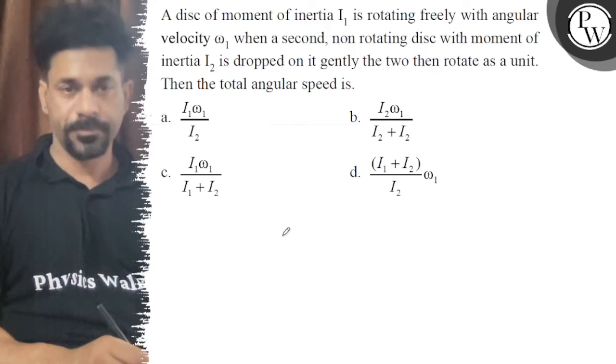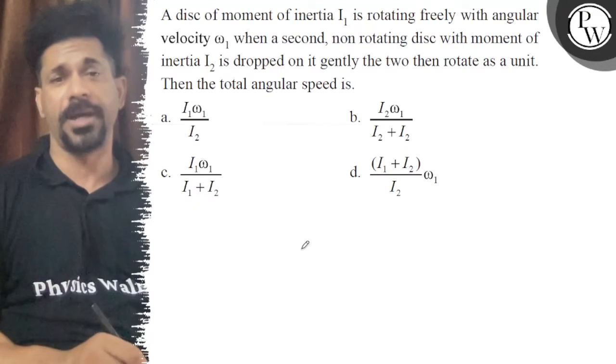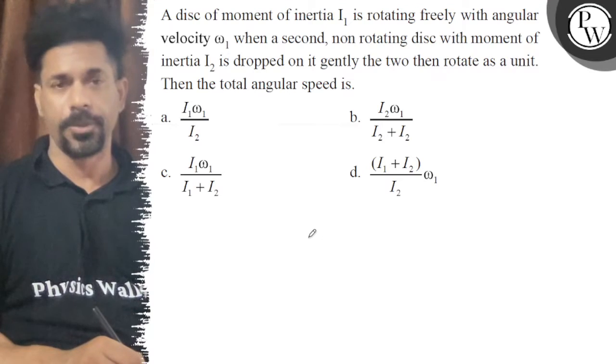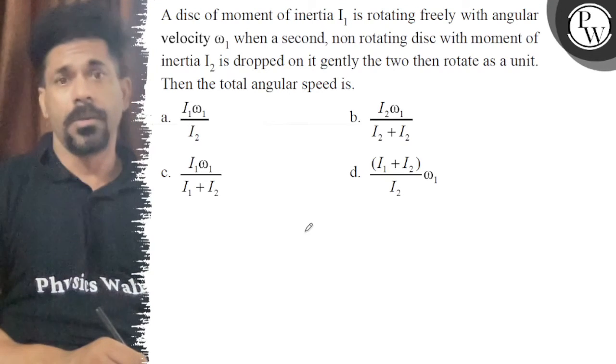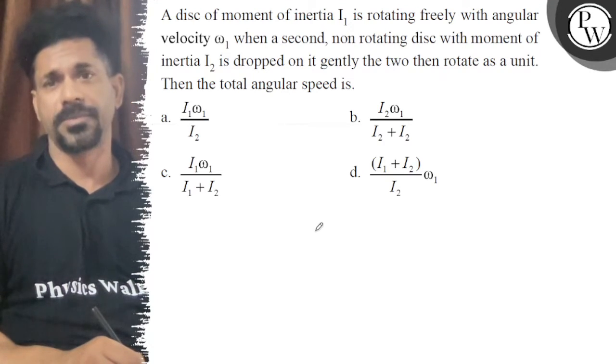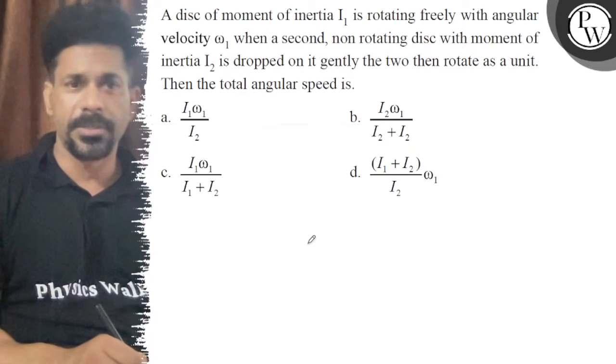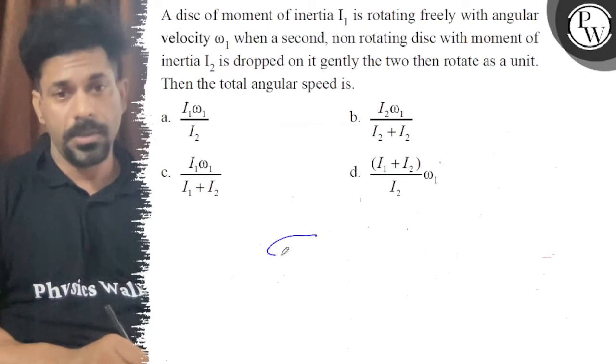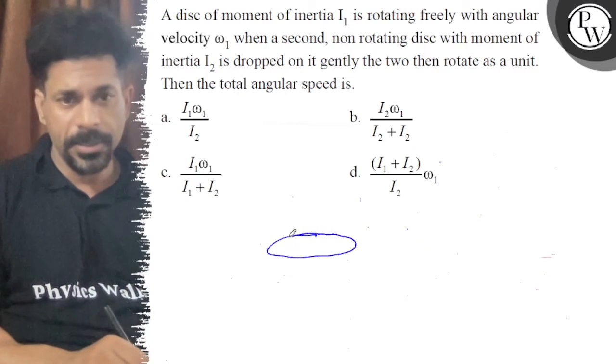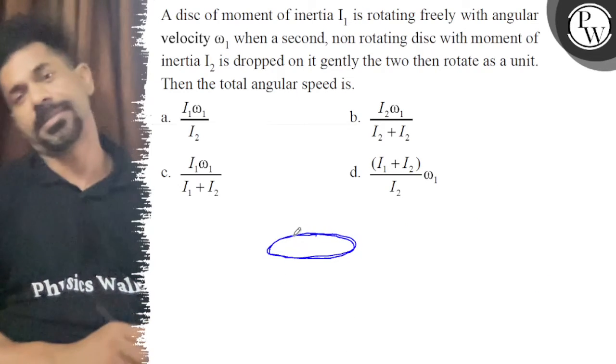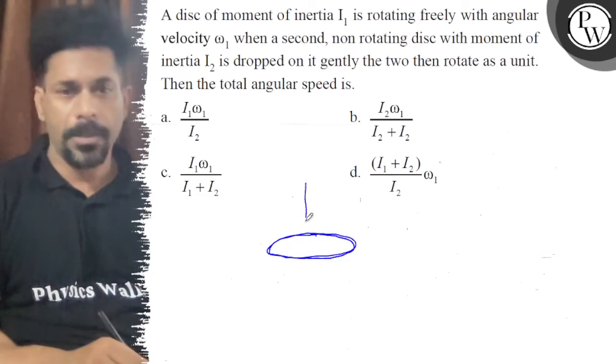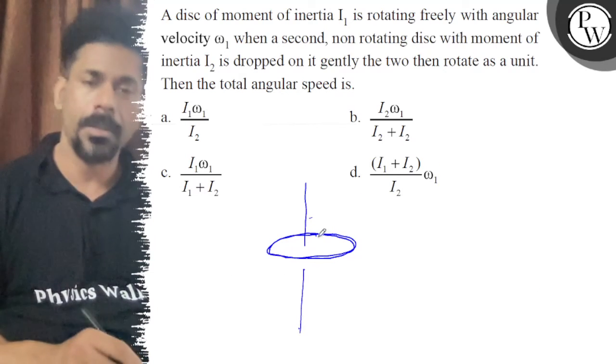Hello, let's see the question. A disc of moment of inertia I₁ is rotating freely with angular velocity ω₁ when a second non-rotating disc with moment of inertia I₂ is dropped on it gently. The two then rotate as a unit. Then the total angular speed is...